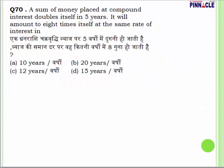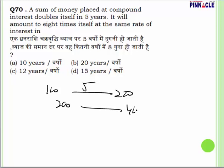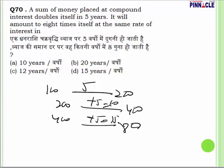Question number 70: A sum placed at compound interest doubles itself in 5 years. So 100 becomes 200 in 5 years, 200 becomes 400 in 10 years, and 400 becomes 800 in 15 years. To become 8 times itself, it takes 15 years. Answer is 15 years.